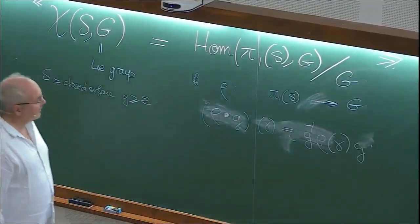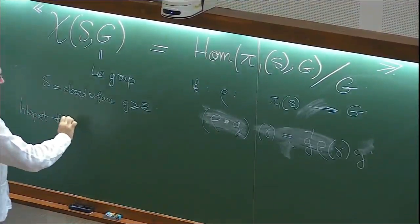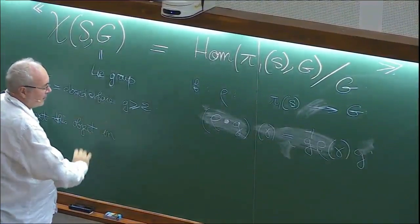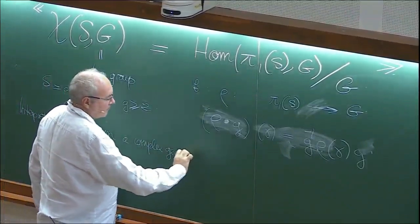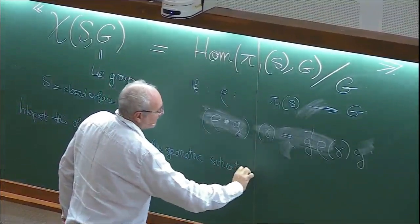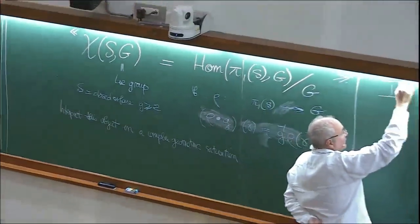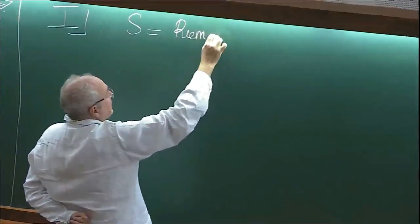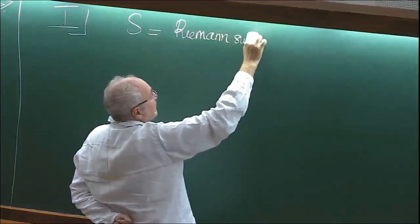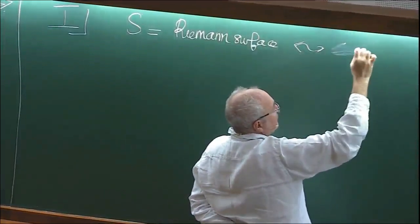The goal of today is to interpret this object in complex geometric data. In my talk, S will be a Riemann surface, which you can think of as a complex curve — so as a complex object its dimension is one, while its real dimension is two.